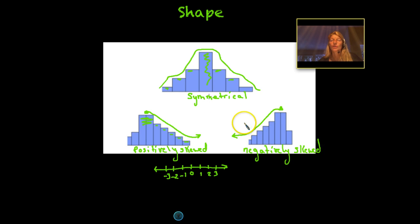And again, we have many other shapes of data, but these are the three very common ones. You have a symmetrical, you have a positively skewed type and a negatively skewed. Okay, so that's shape. Let's look at outliers.